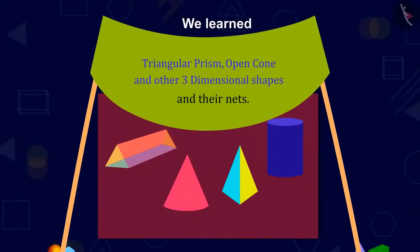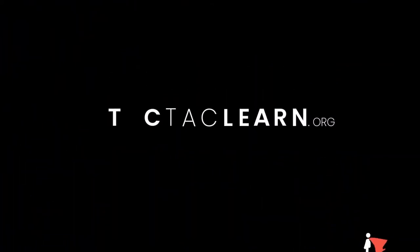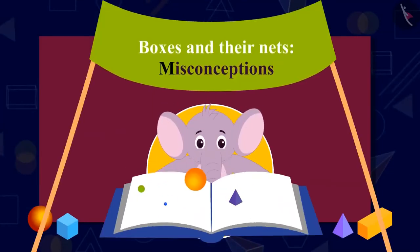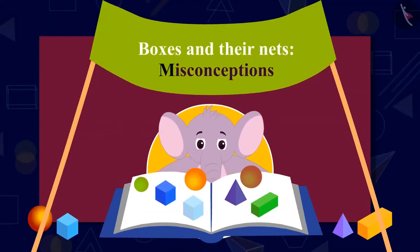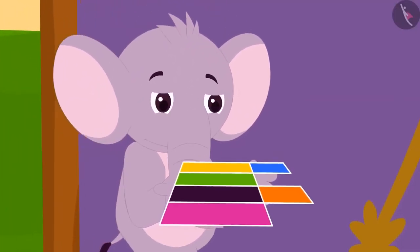Kids, in this lesson, we have learned about triangular prism, open cone and other three-dimensional shapes and their nets. Kids, till now we have learned about boxes and their nets. In this video, we will learn about some of the misconceptions related to it. Appu suddenly came to Babu uncle's house today. A cardboard cutout is also seen in his hand.